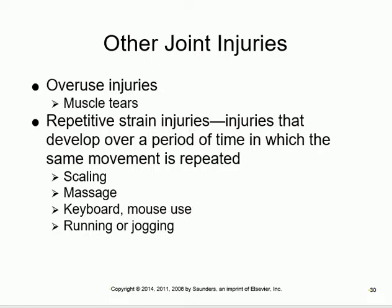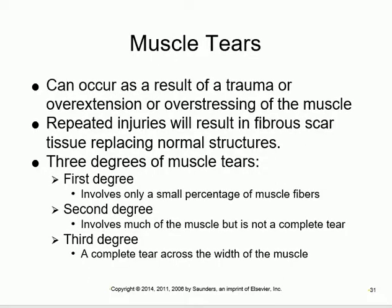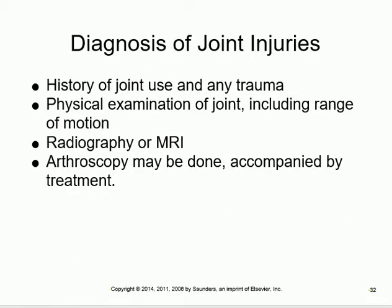Other injuries include muscle tears from over-extension or over-stressing. If a small percentage of muscle fibers are torn, it is a first-degree tear. A good portion torn but not complete is a second-degree tear. If the whole muscle is cut, it is a third-degree tear. For diagnosis: bone problems use bone scan or X-ray; muscles use EMG or biopsy; joints use radiography, MRI, or arthroscopy.